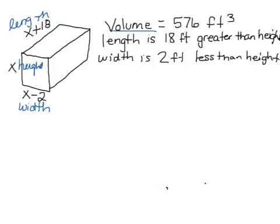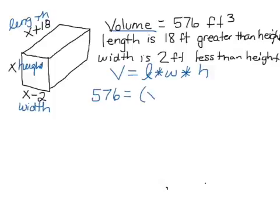They gave us that volume is 576, so volume of a 3D rectangular figure is our length times our width times our height. We can go ahead and fill in each of these. Our volume is 576, our length is x plus 18, our width is x minus 2, and our height is just x.